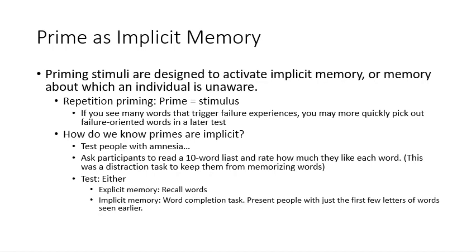Priming is considered implicit memory because it activates memory that someone is unaware of. One form is repetition priming — whatever someone is primed with, they're more likely to produce that in the future. For example, if you see a lot of words linked to failure, you might more quickly pick out failure-oriented words later. We know primes are implicit rather than explicit because we can test people with amnesia. We can ask participants to read a 10-word list and rate how much they like each word.